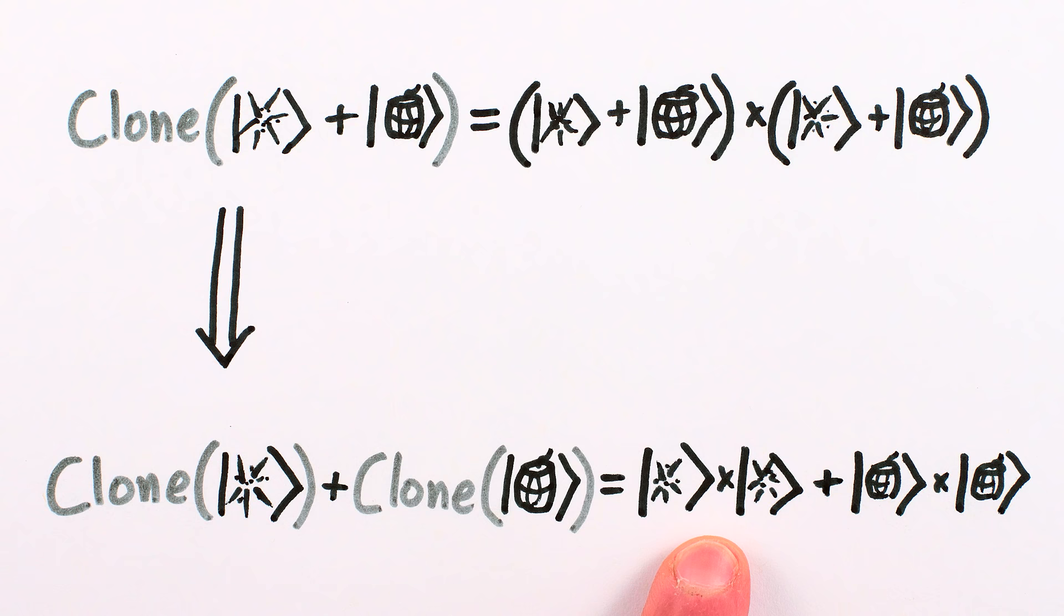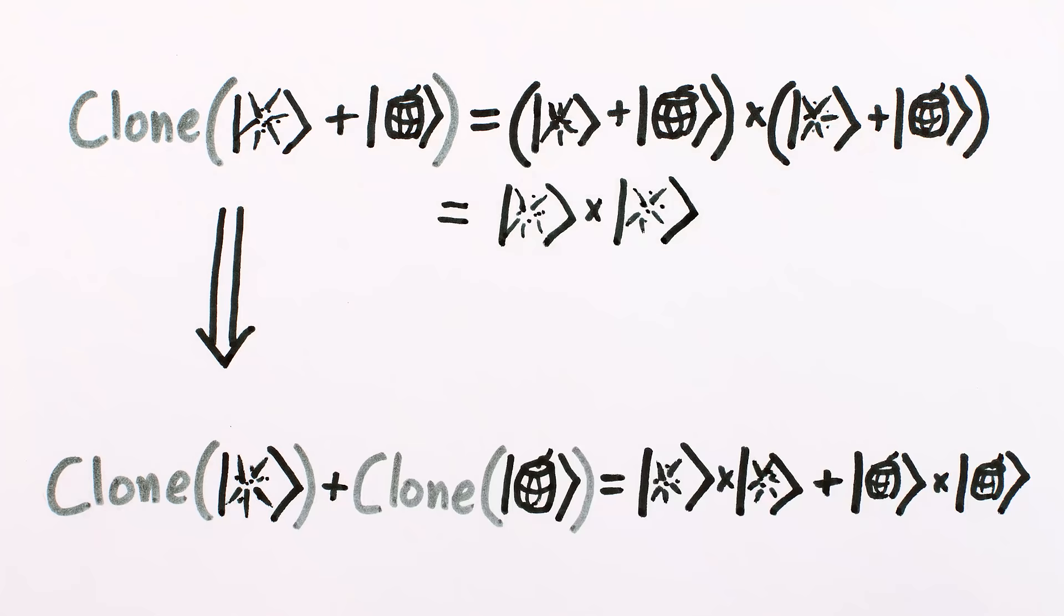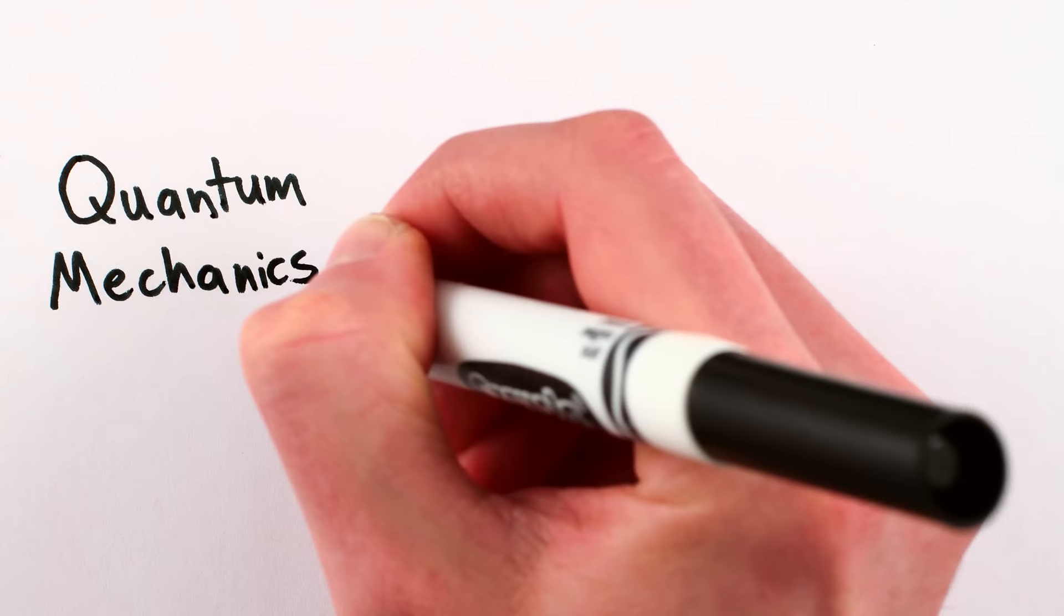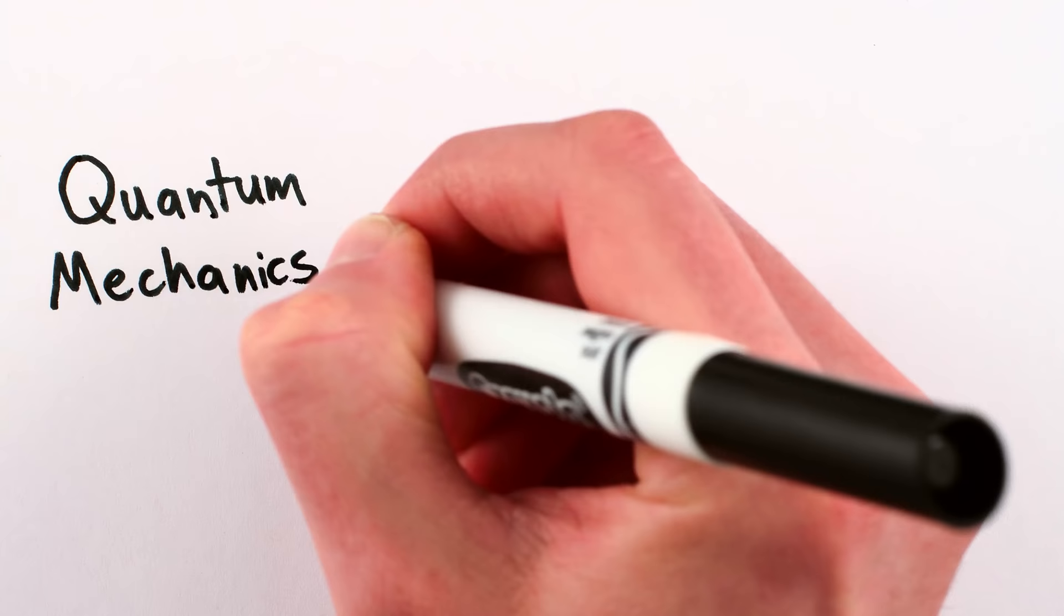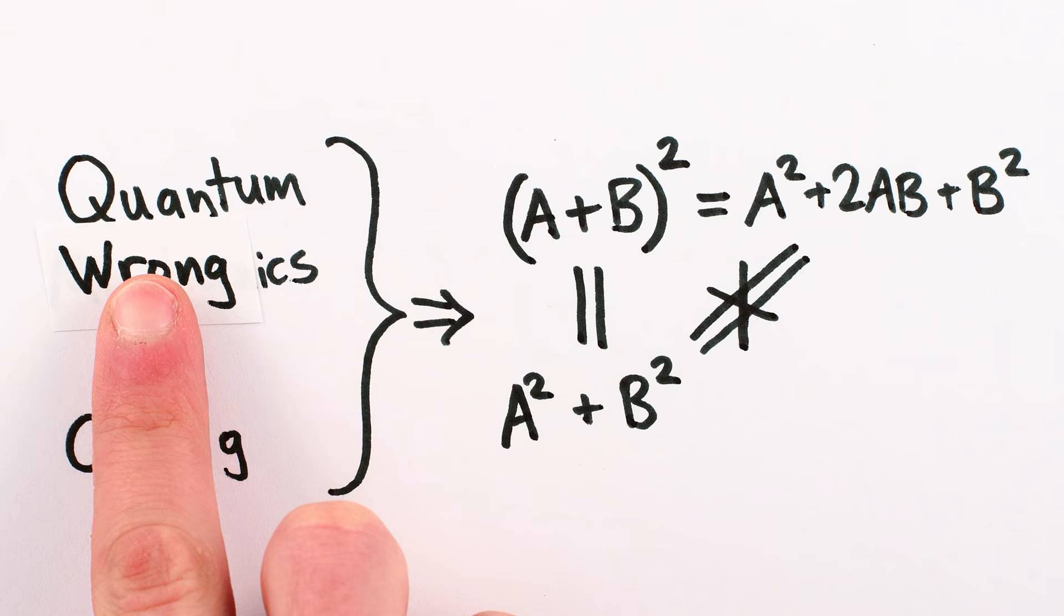But we don't get the same thing, since exploded times exploded plus not exploded times not exploded is not the same as exploded times exploded plus exploded times not exploded plus not exploded times exploded plus not exploded times not exploded. There are these extra terms here that don't match up. Basically, if both quantum mechanics and cloning are true, then a plus b squared must be the same as a squared plus b squared. But a plus b squared is not the same as a squared plus b squared.